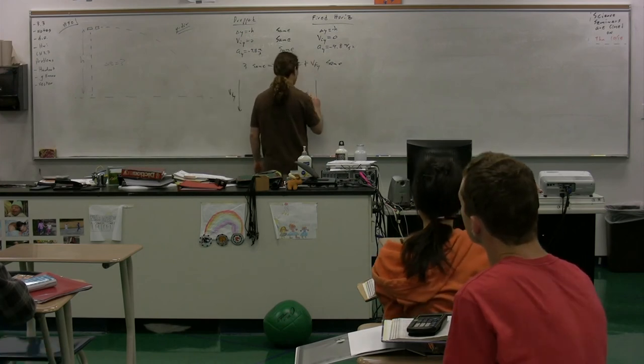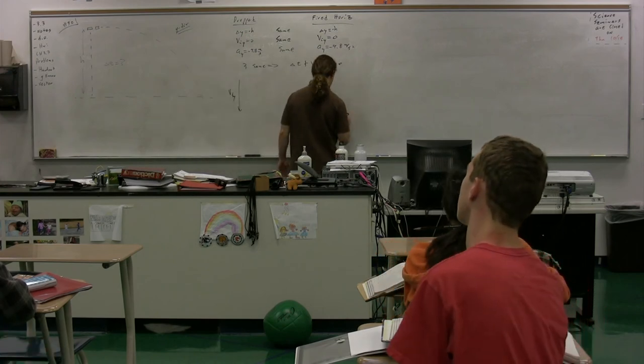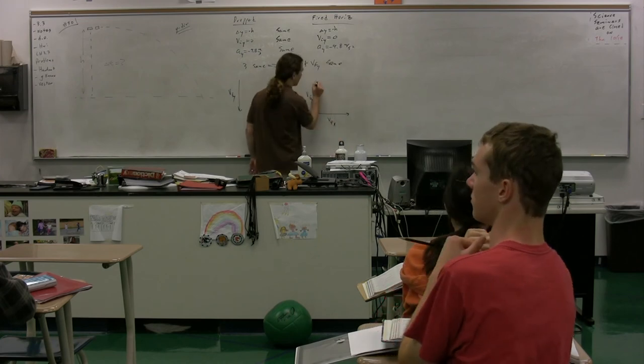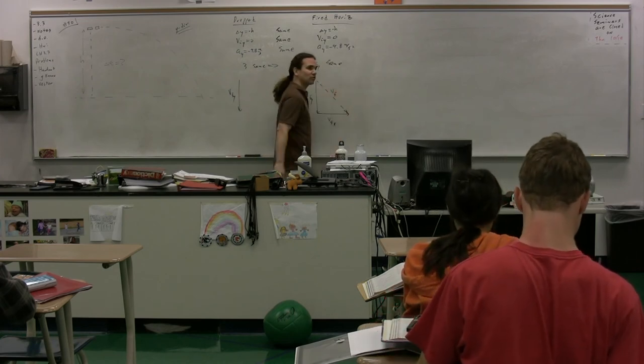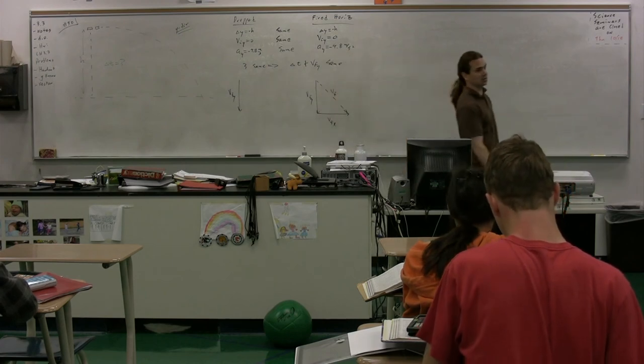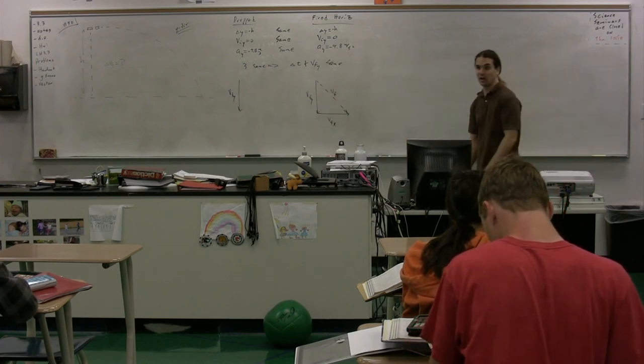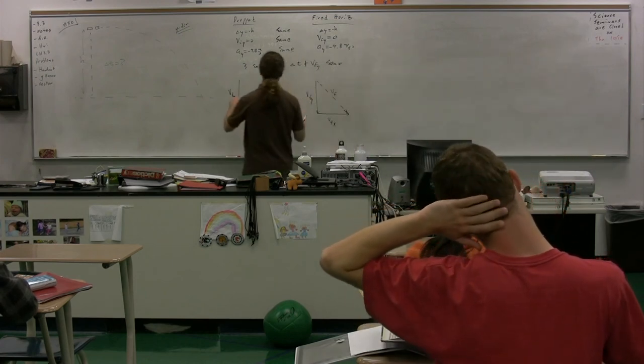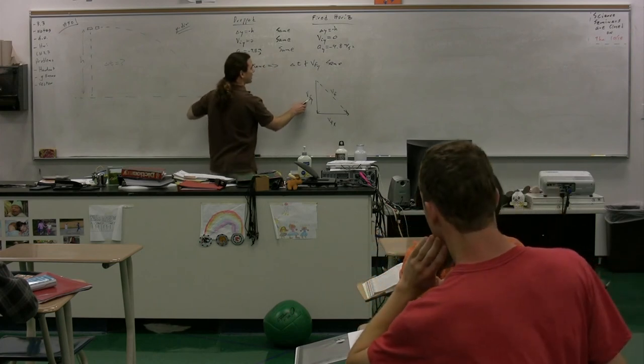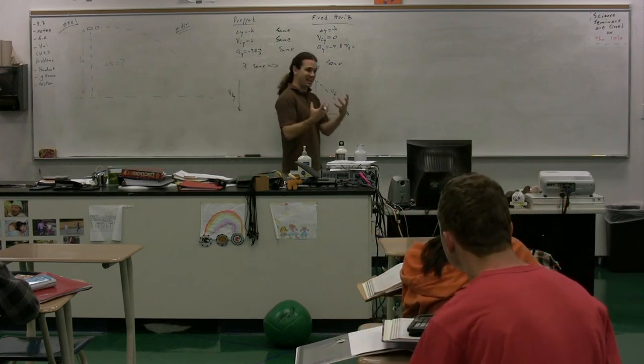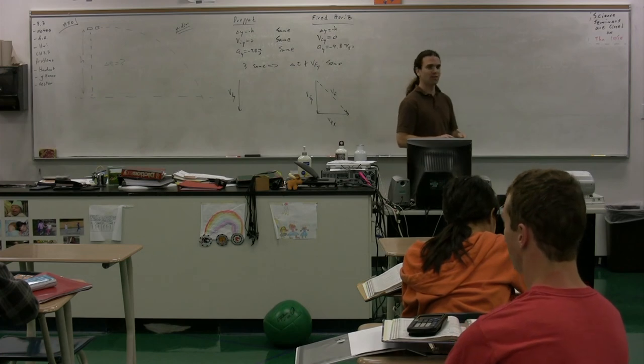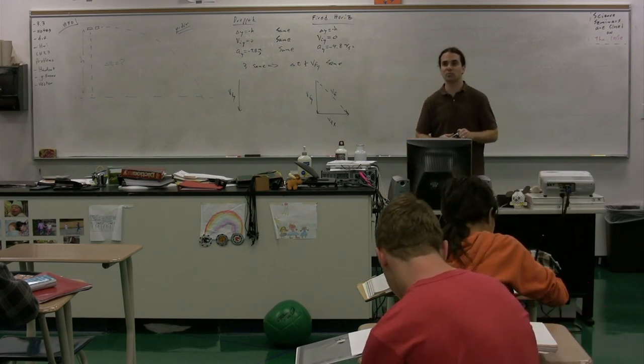But the one that is fired horizontally also has some final velocity in the x-direction. Therefore, it has a larger final velocity because the hypotenuse is going to be larger than either of the two sides. While they do have the same final velocity in the y-direction, the net velocity, the magnitude of that for the one that's fired horizontally is going to be larger.